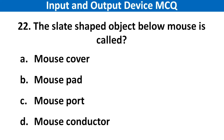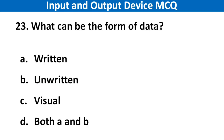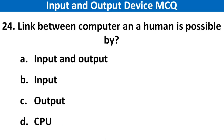Next question: The flat-shaped object below a mouse is called? Right answer is option B: 3 (mouse pad). Next question: What can be the form of data? Right answer is option D: Both A and B. Next question: Link between computers and a human is possible by? Right answer is option A: Input and output.